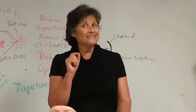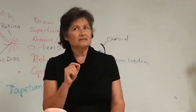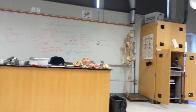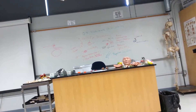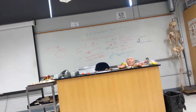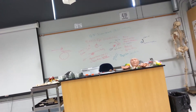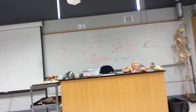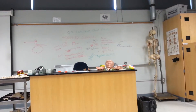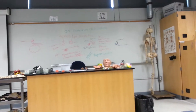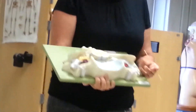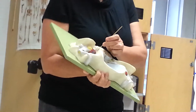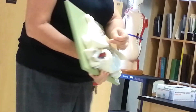Has everyone found the denticulate ligaments? Make sure you look at all the models. So this is the spinal cord — this is the anterior view, this is the posterior view. The pia mater — the extension of the pia mater is called the denticulate ligament. It's right there. That's the denticulate ligament.